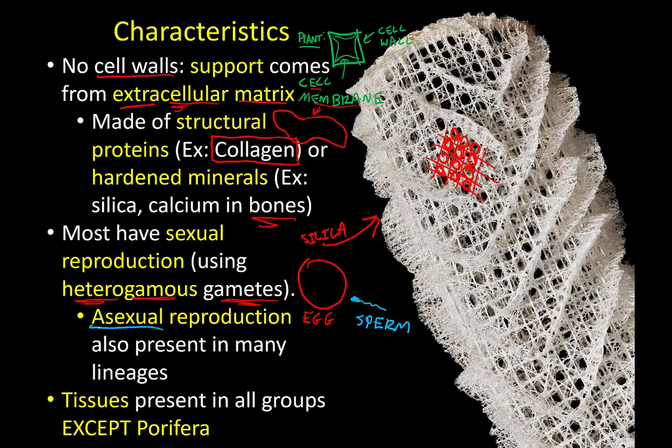Asexual reproduction is also present in many lineages of animals, where two contributions of DNA from two different individuals isn't necessary — all the DNA for a new individual can come from one parent. Finally, tissues: tissues are sets of cells all specialized to do the same job, and they combine to form organs. Your heart is made of cardiac tissue composed of cardiac cells, all specialized for the same job. Tissues are present in all groups of animals except Porifera — poriferans do not have tissues, and we'll talk about why in a couple of slides.